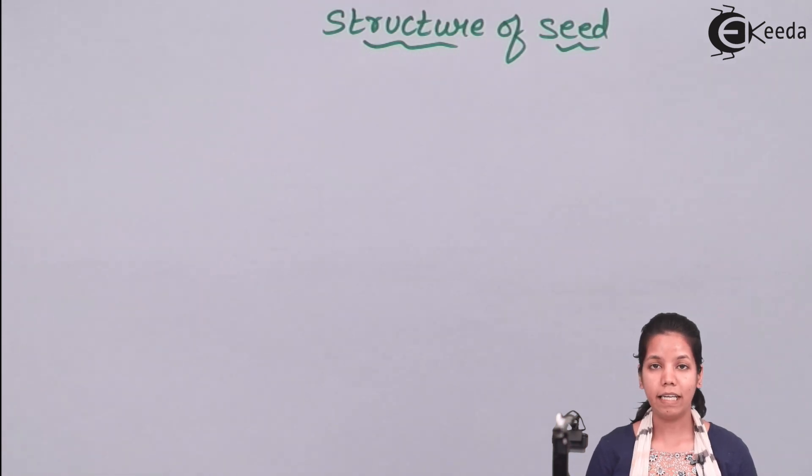A typical seed basically consists of seed coat or outer covering and the embryo region. Those are the two important regions of a seed. Now embryo will grow and lead to the formation of radicle, plumule and two cotyledons.